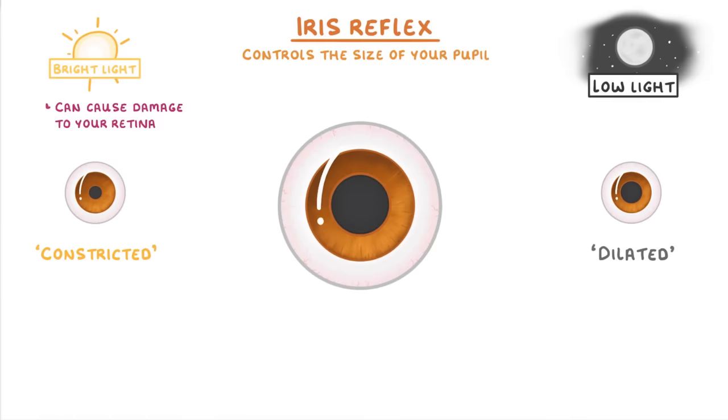To control this process, the iris is made up of two different types of muscles. On the inside are these circular muscles that stretch around the pupil like circles.